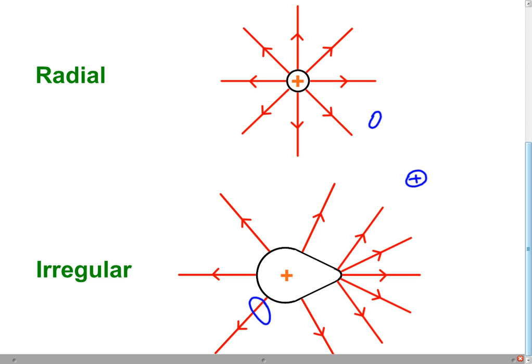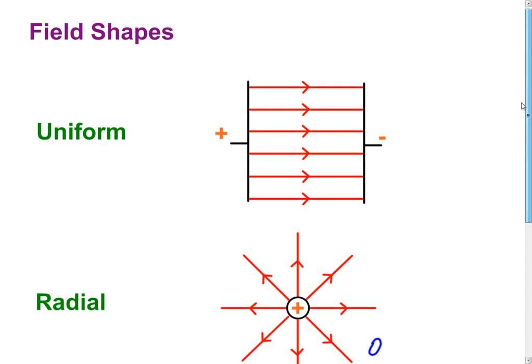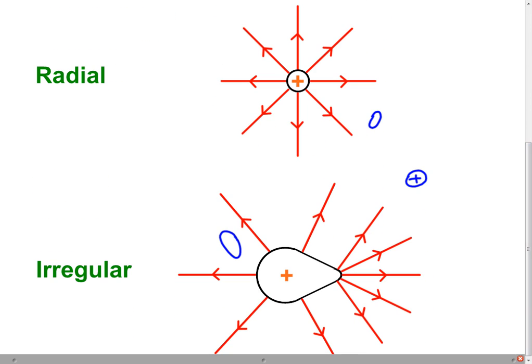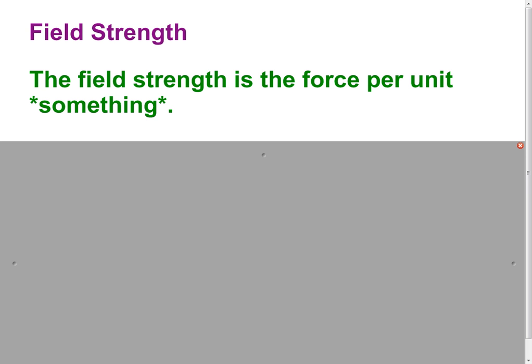You'll probably see something this shape when we get the Van de Graaff generator out later on. So we've got different field shapes and a totally irregular field at the bottom. So, on to the concept of field strength.